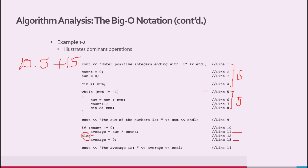We can generalize: if the while loop executes n times, the number of operations executed is 5n + 14 (or 5n + 15). For very large values of n, the term 5n becomes the dominating term, and the constant 14 or 15 becomes negligible.